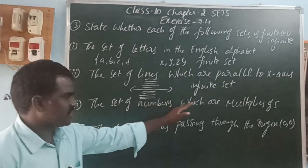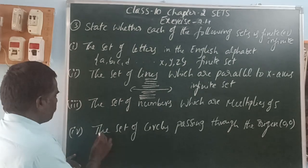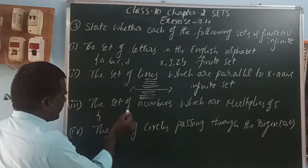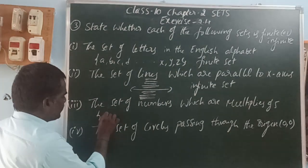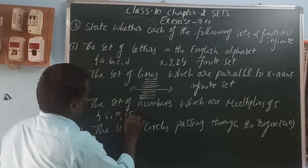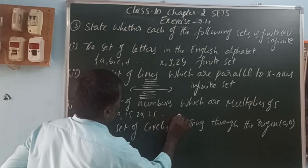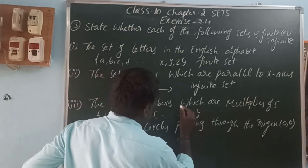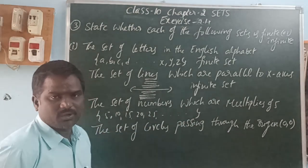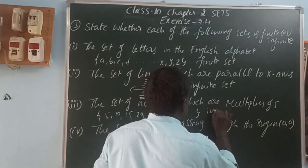Next: the set of numbers which are multiples of five. The multiples of five are: 5, 10, 15, 20, 25, and so on — they are uncountable and never end. So it is an infinite set.